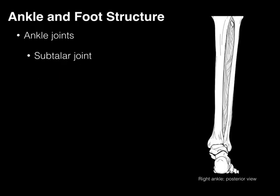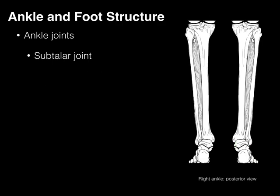The next is our subtalar joint. In green we see the talus, and the subtalar joint is the joint below it, which articulates with the calcaneus, shown in orange, which is why this is also called the talocalcaneal joint. This synovial plane joint allows for movements in two directions.